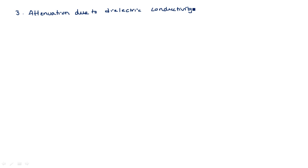Attenuation due to dielectric conductivity: we generally assume that the dielectric material placed between the two conductors should not conduct. However, if the dielectric material does conduct, there will be an associated loss. This loss is studied under attenuation due to dielectric conductivity, indicated by alpha_G.